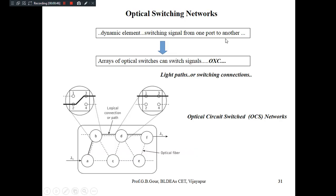If you use a group of such optical switches, we can switch more than one signal from a set of input ports to a set of destination ports. This corresponds to optical cross connectors, connecting or switching light paths between different ports of the network.